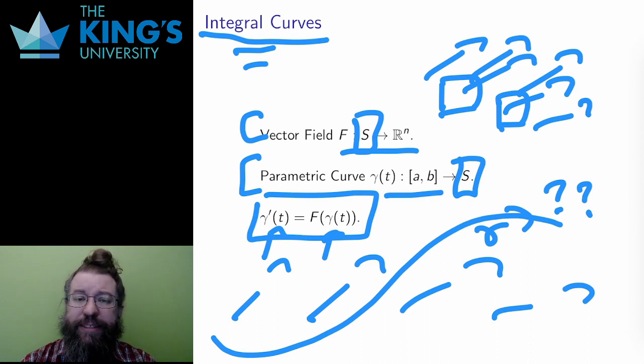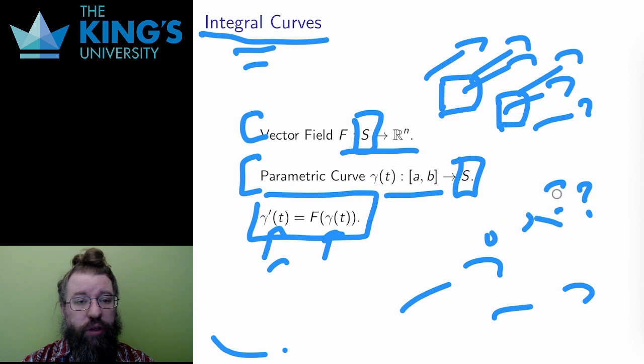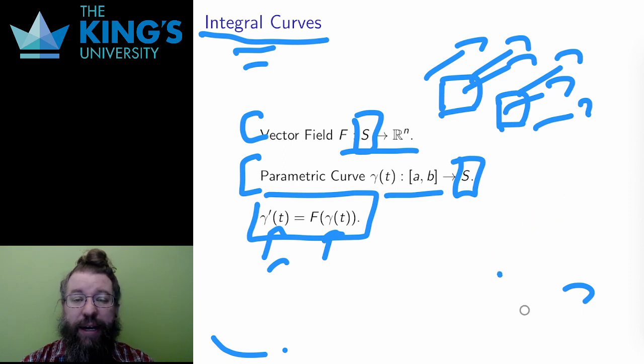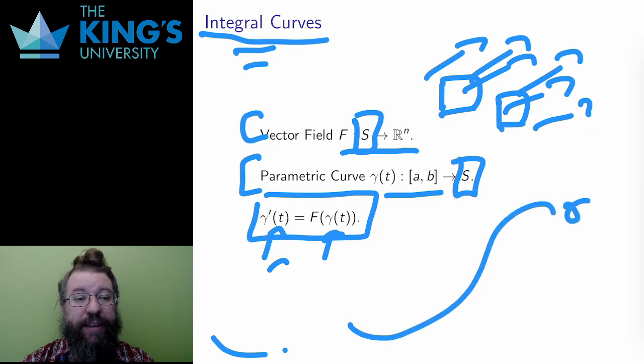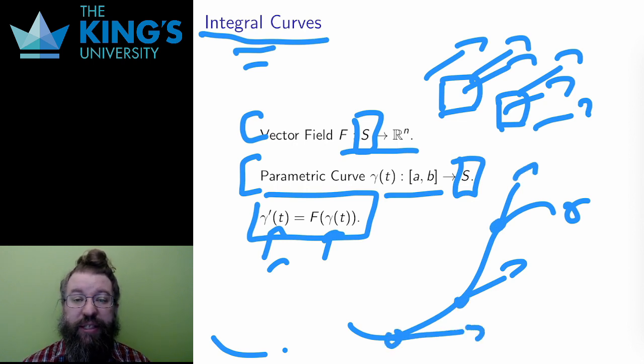What does this mean? Well, the tangents are the direction of motion of the curve. At an instant in time, the tangent points in the direction of the path, with its length measuring the speed. By saying that the tangent is the same as the vector field, this means that the vector field describes all the directions and speeds of the path.